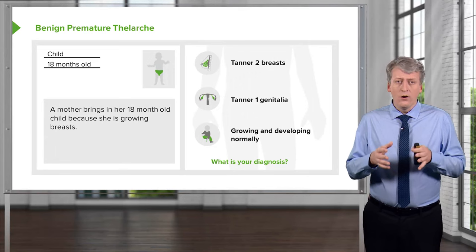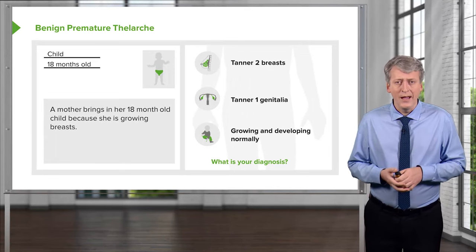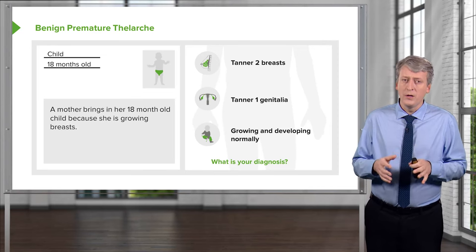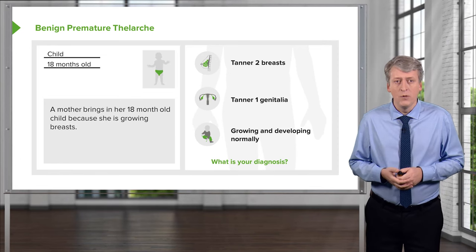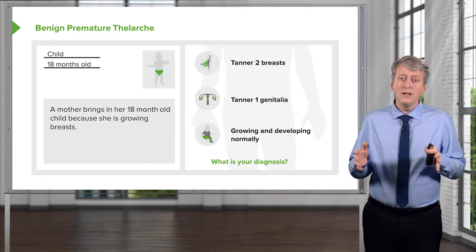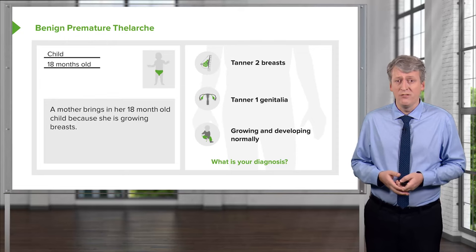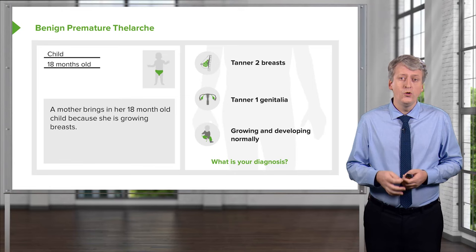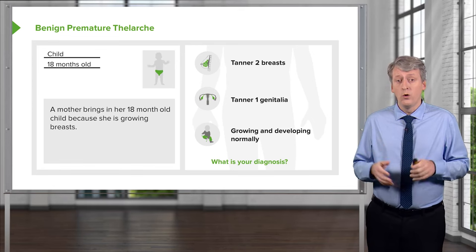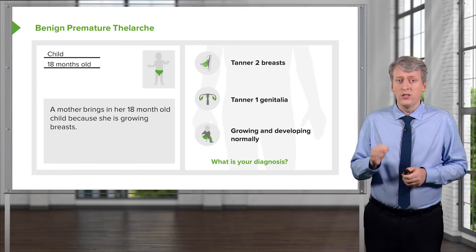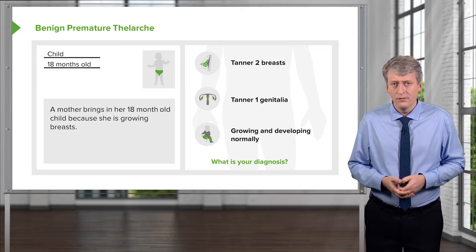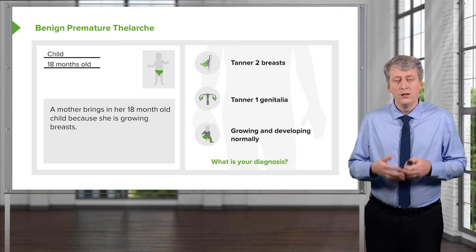Let's look at some areas where things go wrong — where puberty isn't going as we would expect and we might need to make an intervention. Here is a child who is 18 months of age, a girl, whose mom brought her in because she has begun growing breasts. It is normal to be Tanner 2 around age 10, but this child is only 18 months. A full exam notes Tanner 2 breasts but Tanner 1 genitalia — in other words, no pubic hair at all. The child is otherwise growing and developing normally. The diagnosis is benign premature thelarche, a benign condition where children start growing breasts very early but no other signs of puberty are evident. If this happens, there is nothing that needs to be done — simply reassurance.